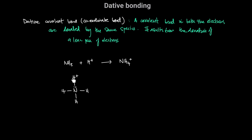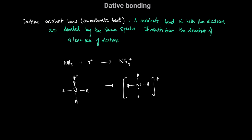In this fourth bond, both the electrons are coming from nitrogen. This arrow from the lone pair to the H⁺ shows the formation of a dative bond where both electrons are being donated by the nitrogen atom, resulting in the formation of the ammonium ion. This arrow shows the formation of a dative covalent bond.